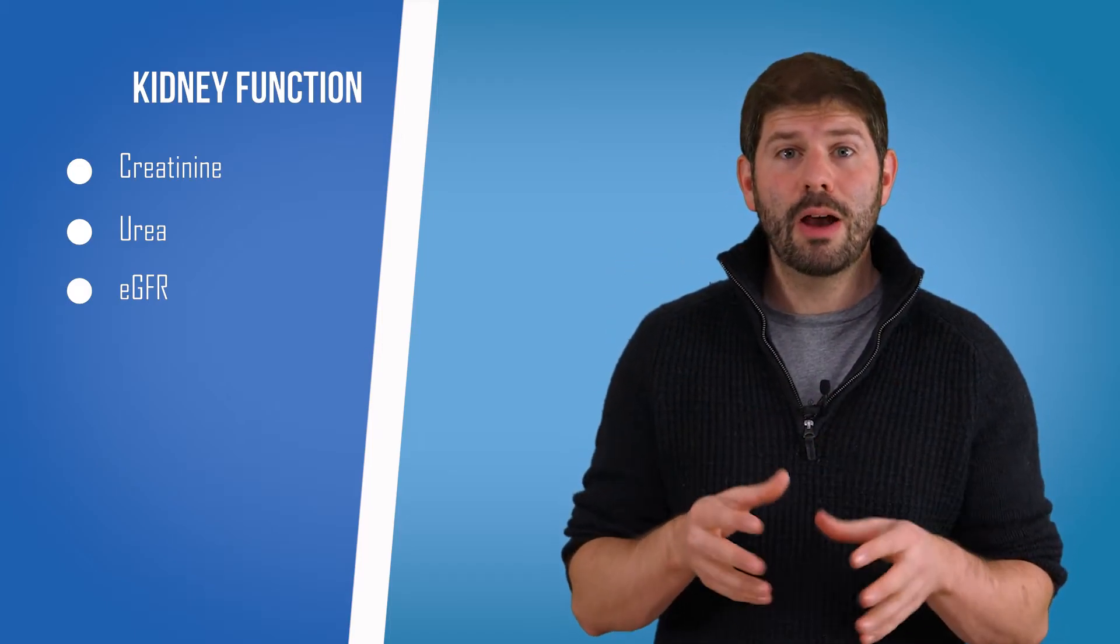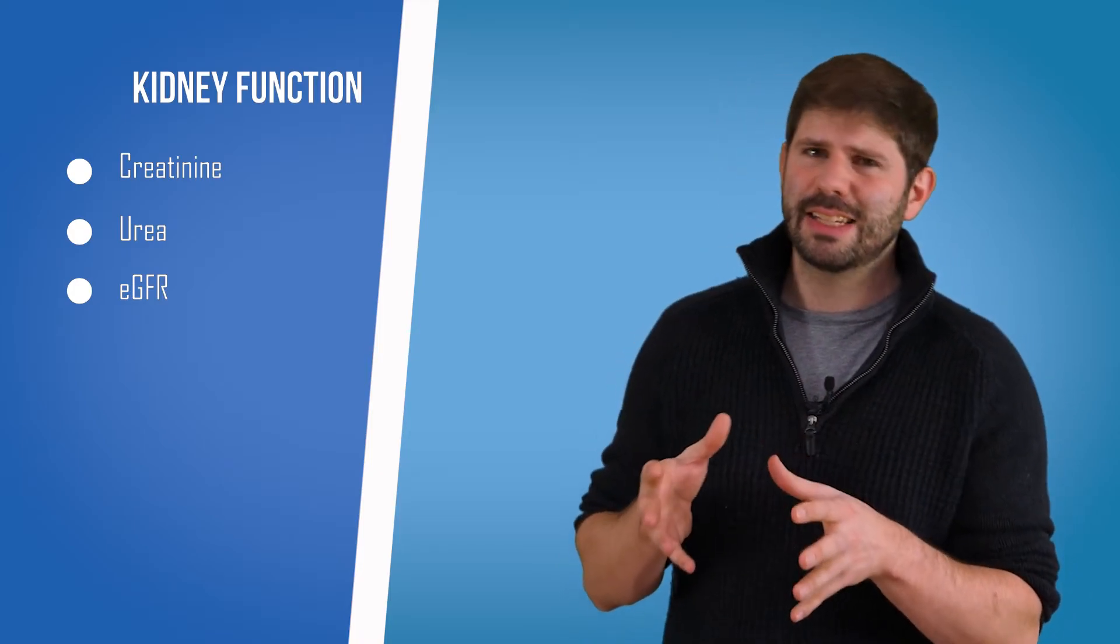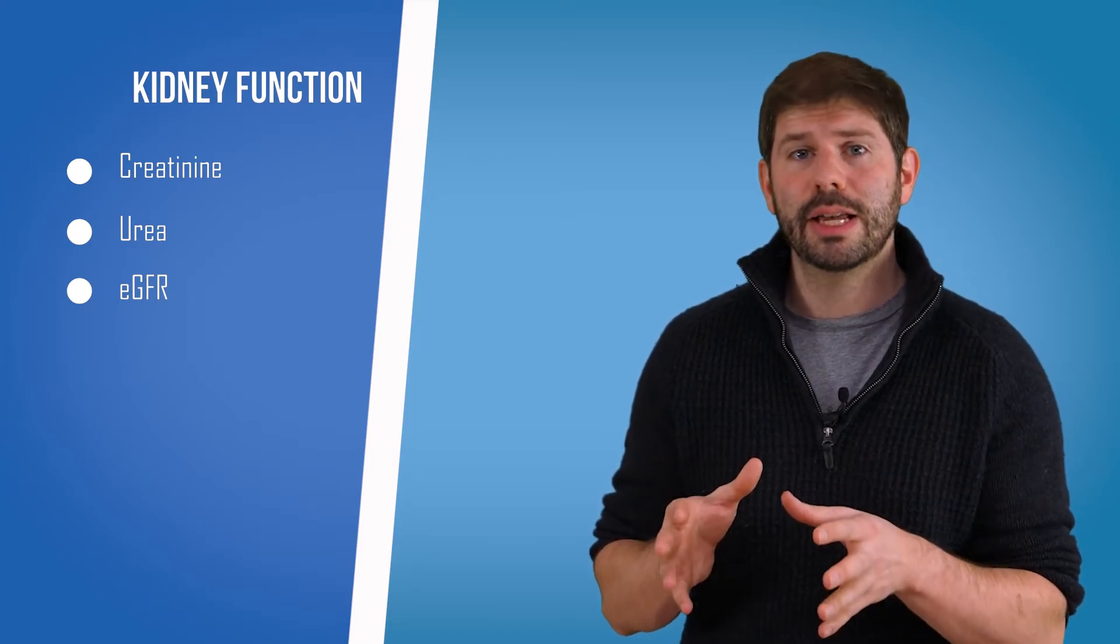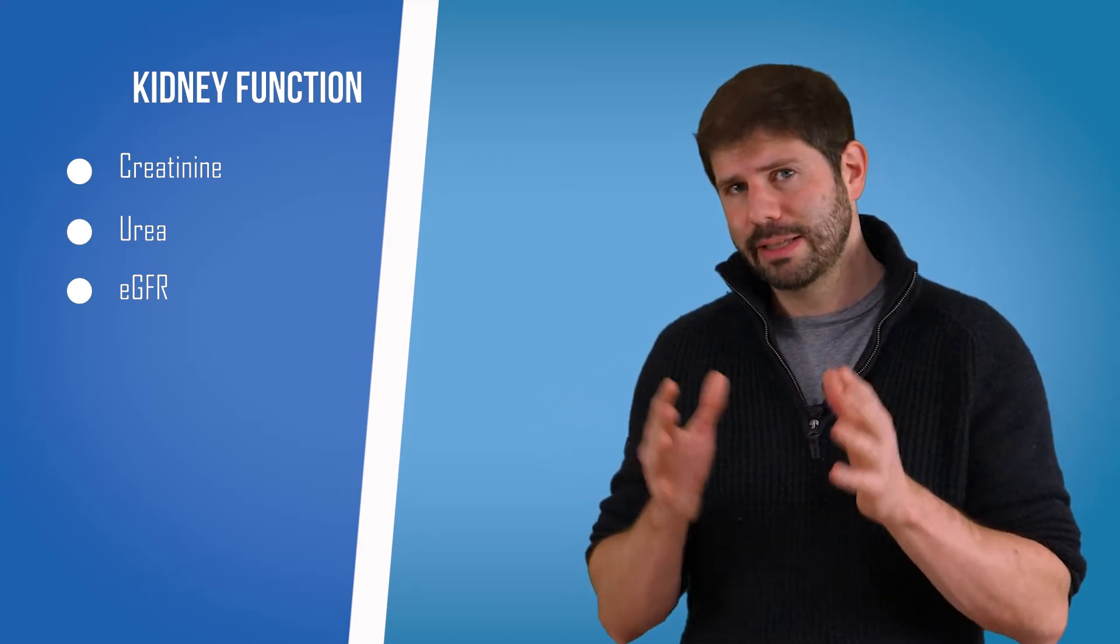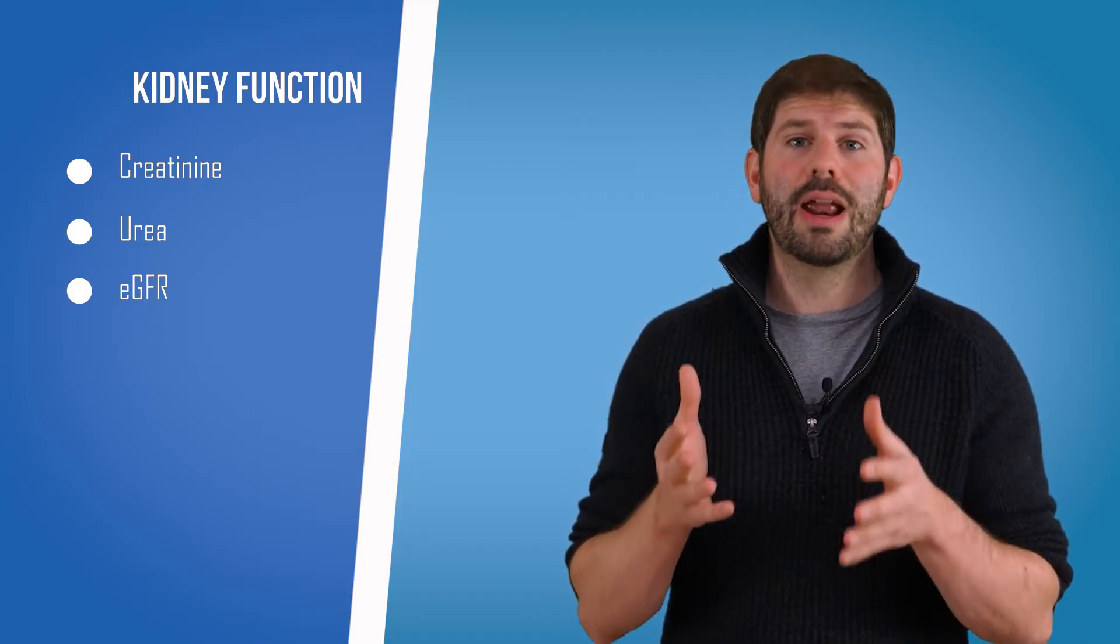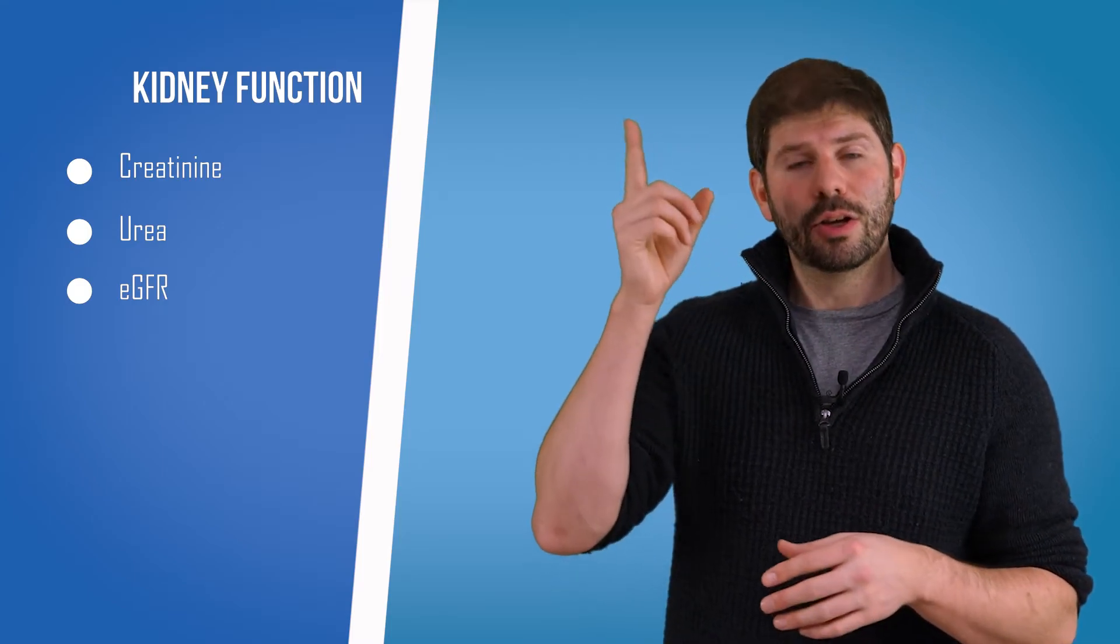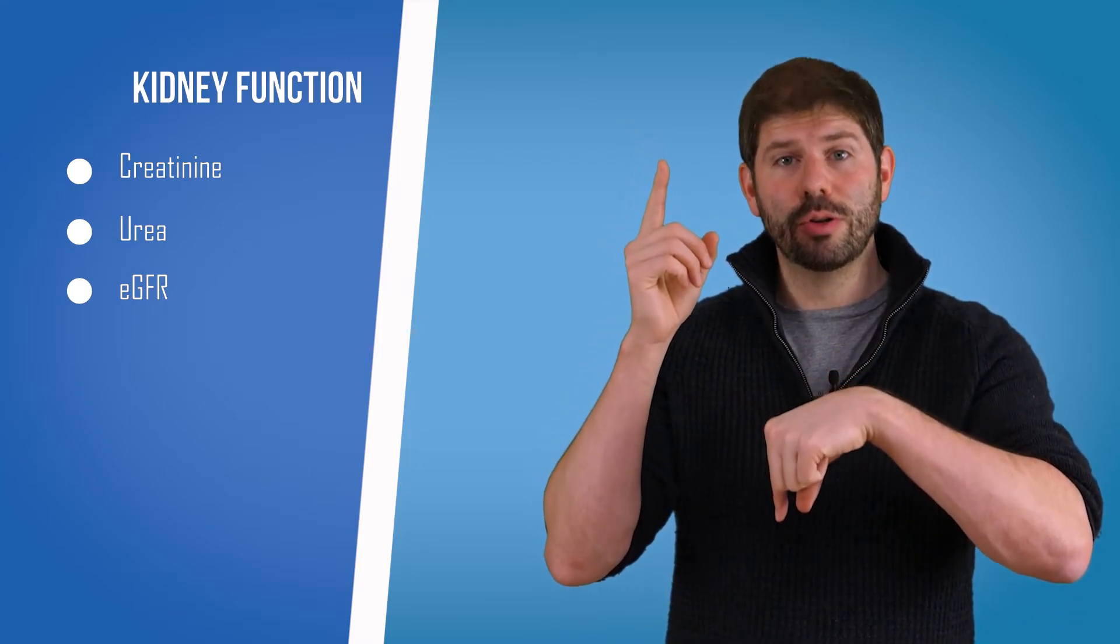Now, to work out what the GFR – the glomerular filtration rate – is by itself is actually quite a complicated and expensive process. So we tend to estimate it, hence estimated glomerular filtration rate. We do that primarily by looking at your creatinine. So everything I said earlier about what makes your creatinine go high can also make your eGFR go down.